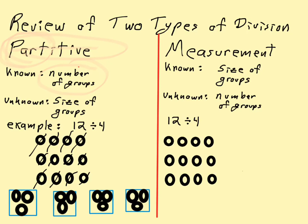So we've just taken these 12 things, put them into four equal-sized groups, and the size of the group is then three because each group has the same size—that's three. That's partitive division.